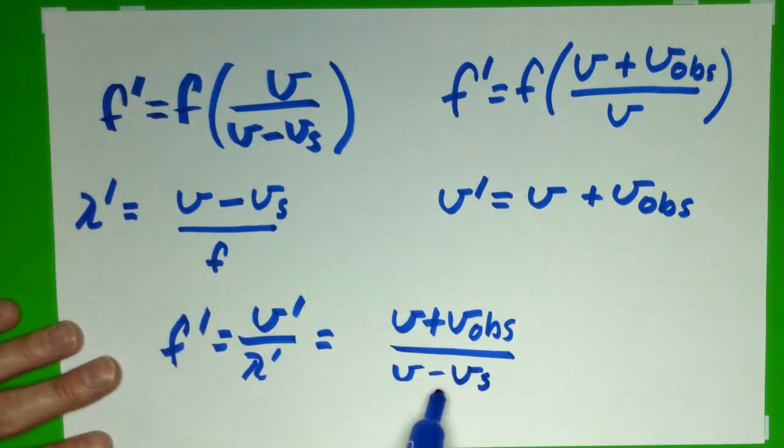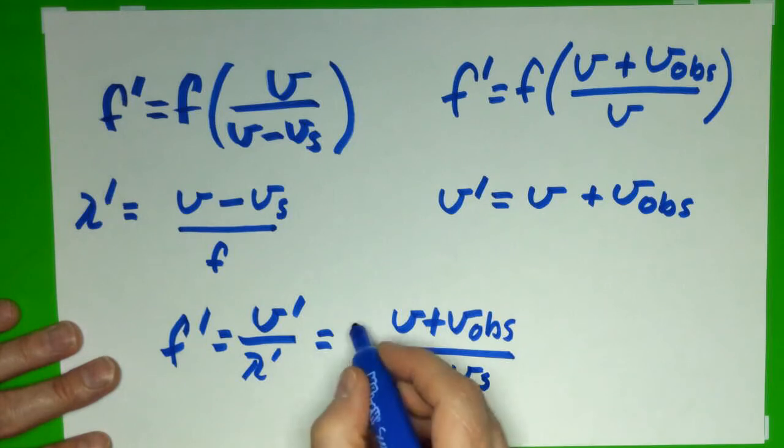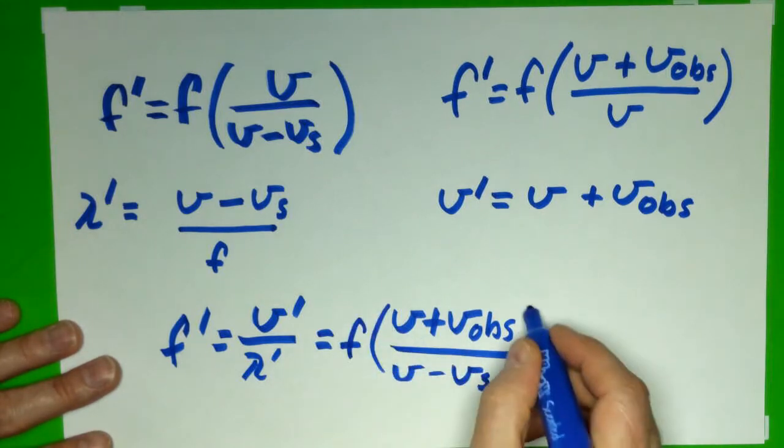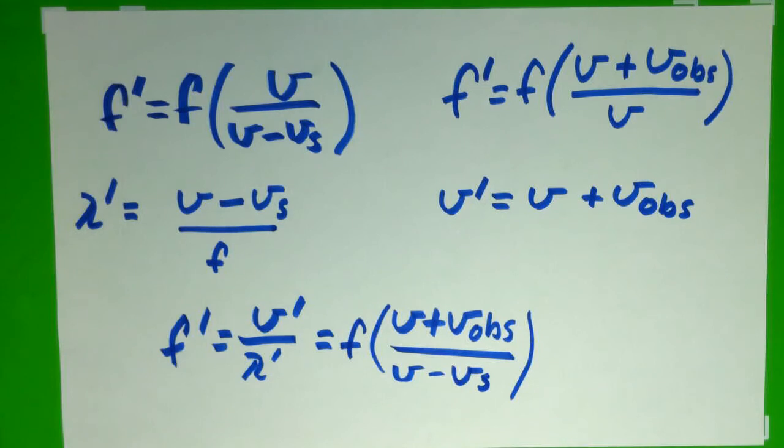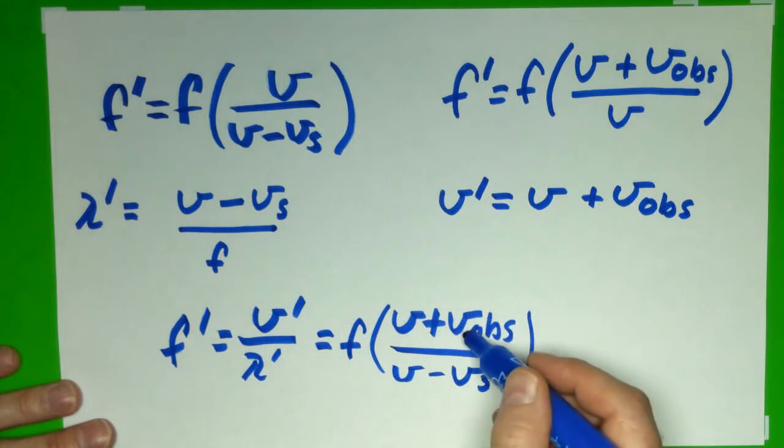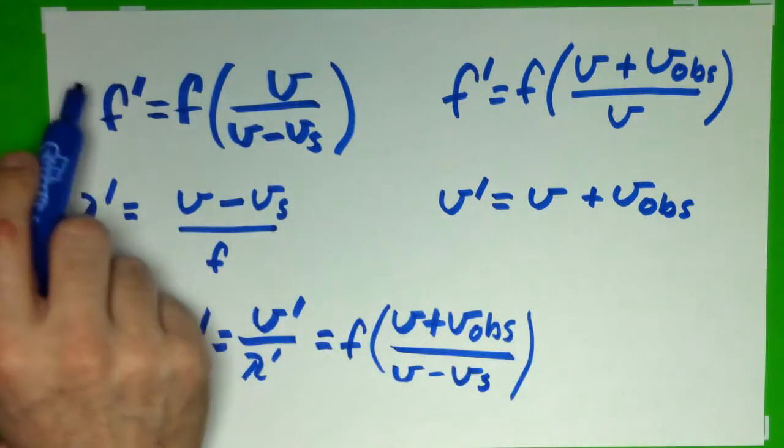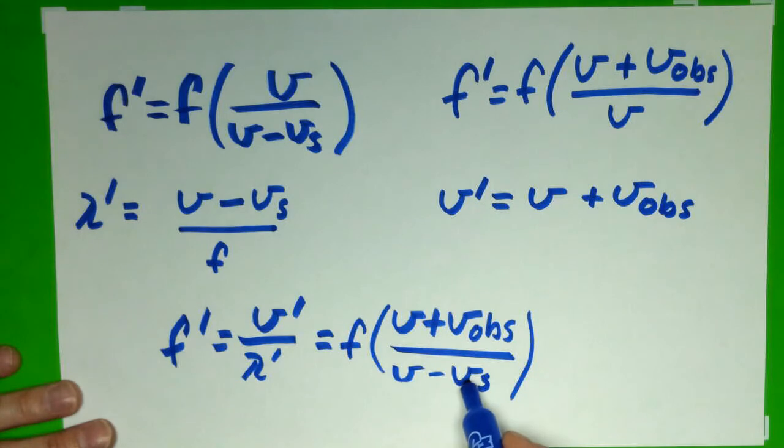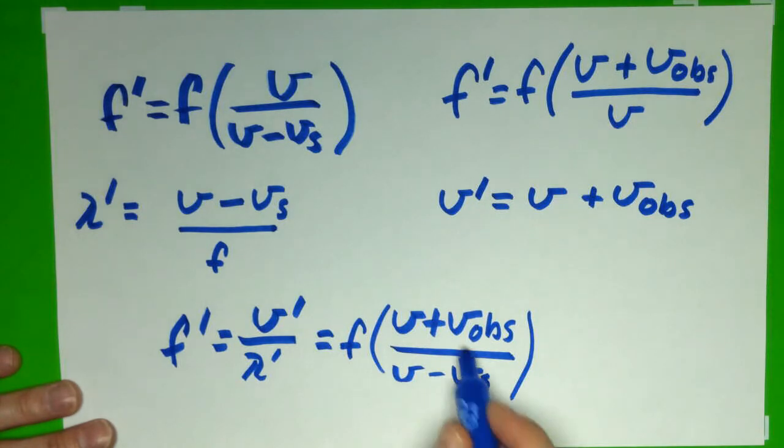And that f would be in the denominator of the denominator, which gets flipped up here. That's a succinct way of taking into account all possibilities. So if the observer is not moving, this becomes zero, then I get this. If the source isn't moving, then this becomes zero, then I get this.